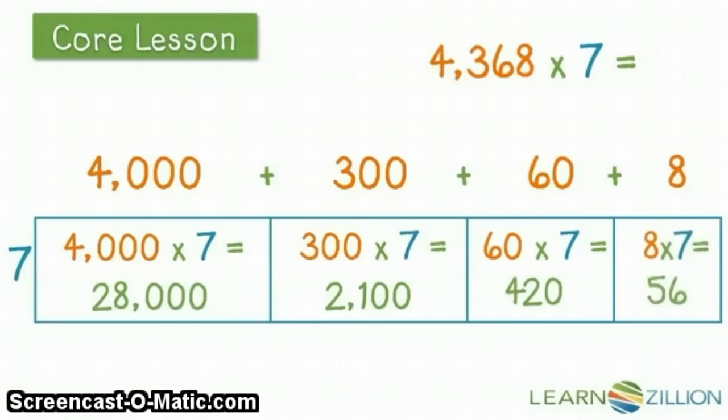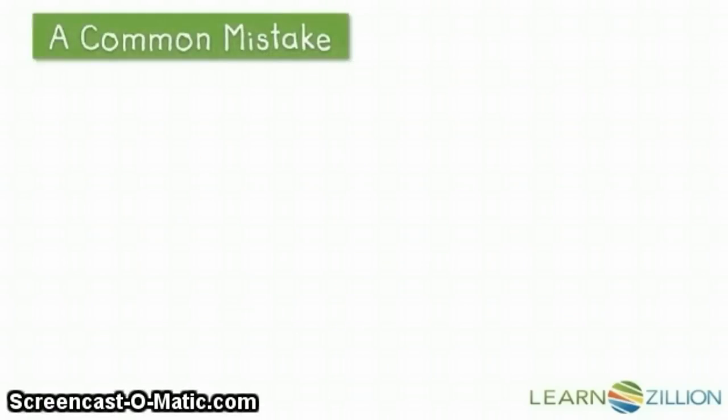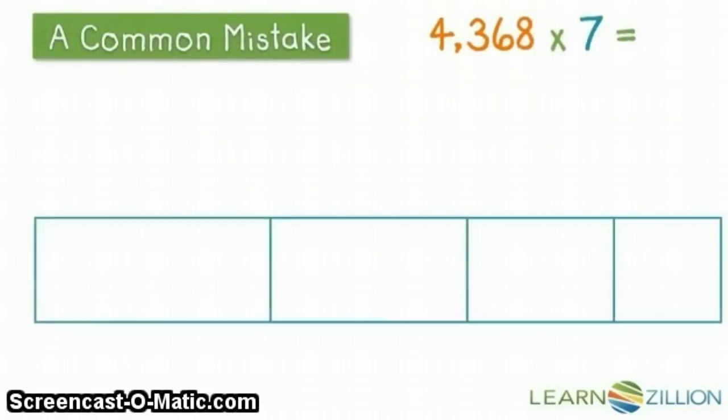And 8 times 7 equals 56. The major mistake you want to avoid when setting up your area model is not respecting each digit's position. Many students, when they're first learning multi-digit multiplication, expand 4,368 like this.